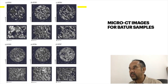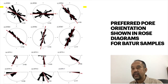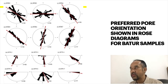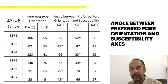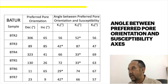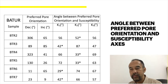In this picture we can see the pore distribution images based on the micro CT scans. The images were then translated into rose diagrams showing the preferred pore orientations. In this table, we can see that some samples show good agreement between the preferred pore orientations and the susceptibility axis.